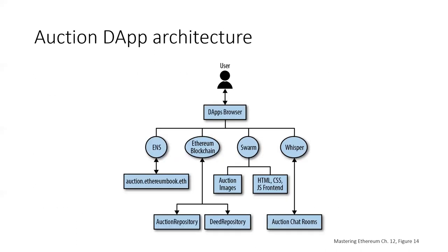Here's a look at our auction dApp architecture. The user interacts through a dApp browser backed by the Ethereum blockchain, Swarm for content — auction images, HTML, stylesheets, and a JavaScript front end — Whisper for auction chat room messaging, the Ethereum Naming Service to access the dApp via auction.ethereumbook.eth, and the Ethereum blockchain itself supporting two smart contracts: the auction repository contract and the repository contract.